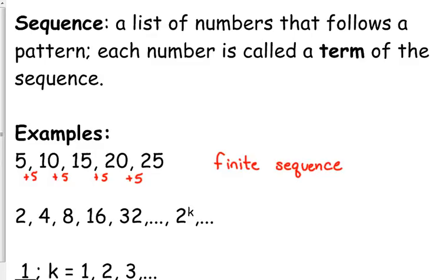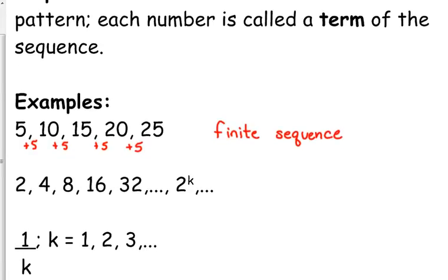Notice the next two have the ellipse at the end, the dot, dot, dot. Those are infinite sequences. They have no end. They can keep going forever and ever, whatever pattern they are following. If you'll notice, this one we are multiplying by two to get the next term. So that's an infinite sequence there.